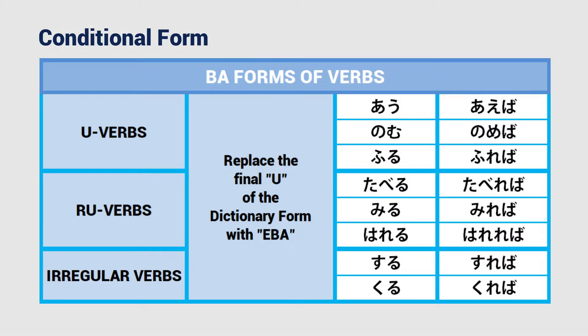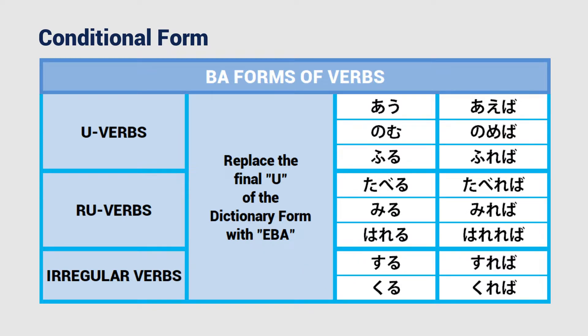The ba forms for all types of verbs are formulated by changing the final u of the dictionary form to eba. So au becomes aeba. Taberu becomes takereba. The irregular verbs: suru becomes sureba, and kuru becomes kureba.